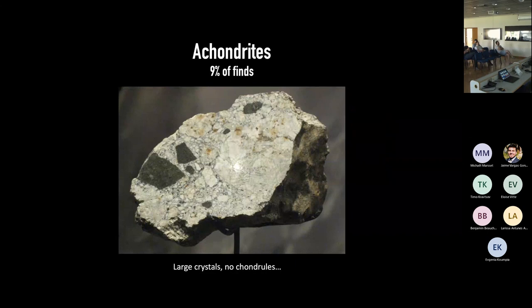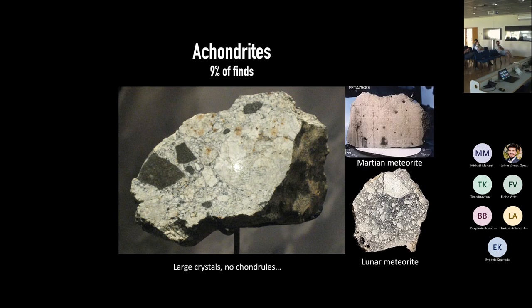An achondrite is a type of meteorite representing about 9% of finds. We don't see chondrules — instead we see large crystals — because these objects come from differentiated planetesimals that heated and differentiated into a core, mantle, and crust, a bit like the Earth. The achondrites are fragments of the crust of these differentiated planetesimals. Interestingly, a tiny fraction of achondrites come from the Moon, and others come from Mars — so we have meteorites from the Moon and Mars in our collections.